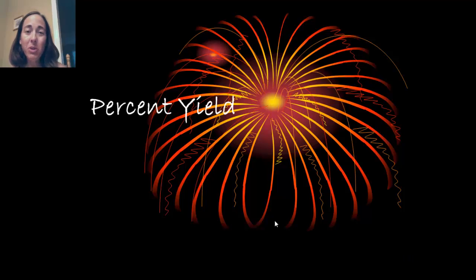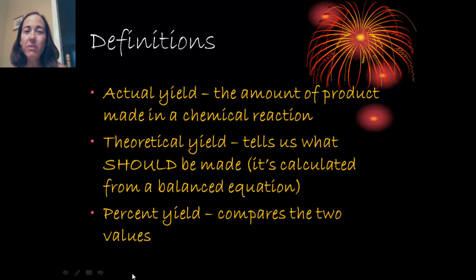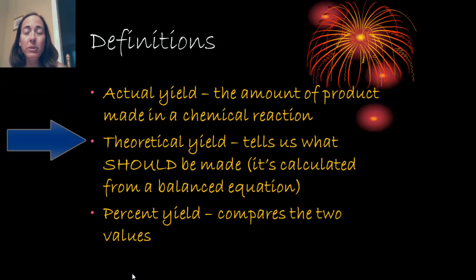Let's use what we know about stoichiometry to calculate percent yield. Let's start out with some definitions. Percent yield is actually going to compare what you get in your lab experiment. That's your actual yield. It's what's actually made during the reaction. You compare that to the theoretical yield. The theoretical yield is what should be made in the lab activity. The theoretical yield is a calculated yield. It comes from a balanced equation. That's the stoichiometry that you've been doing.